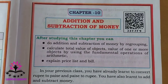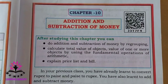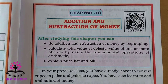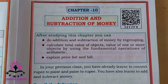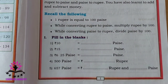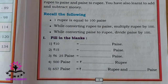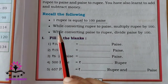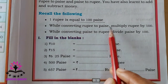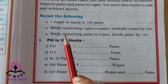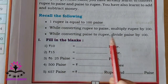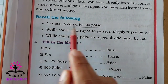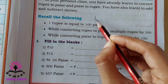Hello students, in today's class we are going to study a new chapter from your Part 2 textbook — that is Addition and Subtraction of Money. From your previous classes you know that one rupee is equal to 100 paisa. While converting rupee to paisa, multiply by 100. While converting paisa to rupee, divide by 100.